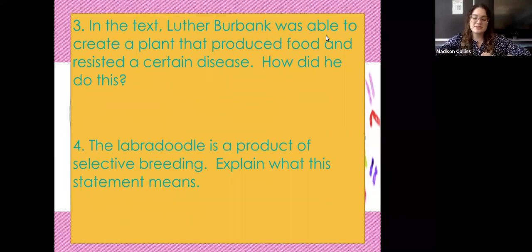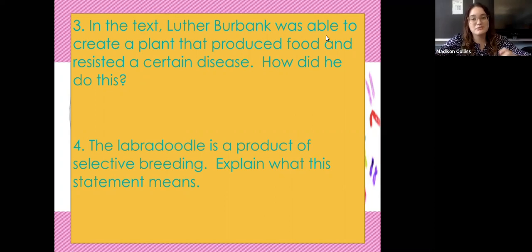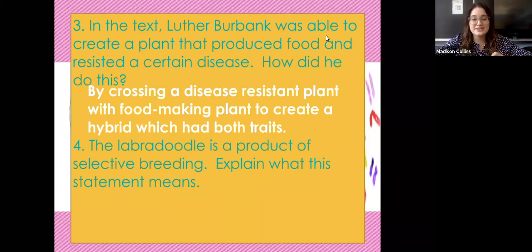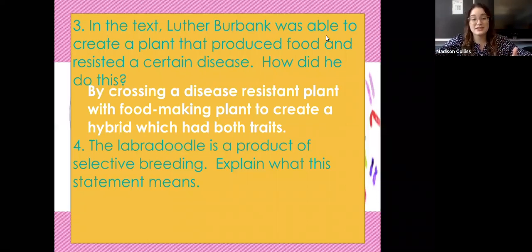Number three: Luther Burbank was able to create a plant that produced food and resisted a certain disease — how did he do this? Selective breeding is trying to get the best of both worlds. He crossed a disease-resistant plant with a food-making plant, and the offspring ended up with both of those traits. It was a hybrid that had both disease resistance and food-making ability.